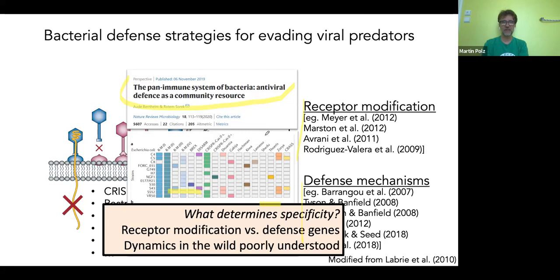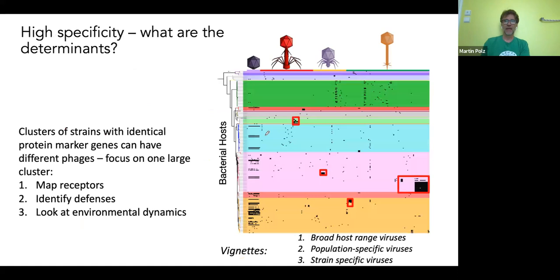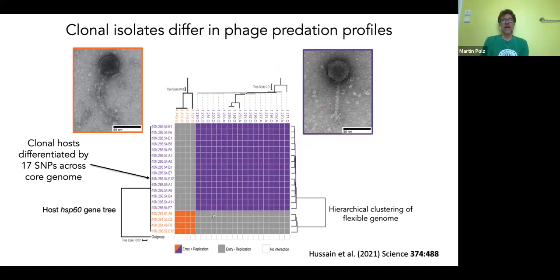Sorek and Bernheim coined the idea of a pan-immune system defending bacteria against viruses, because they saw relatively high turnover of these defenses among strains from the same species. The question for us was: what about the environment? What really determines specificity — receptor modification or internal defense genes? We argued that the dynamics in the wild are actually quite poorly understood, so we decided to map the receptors, identify defenses, and look at the environmental dynamics of interacting pairs.